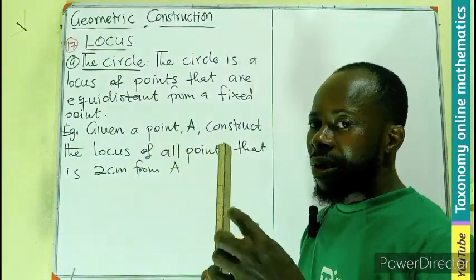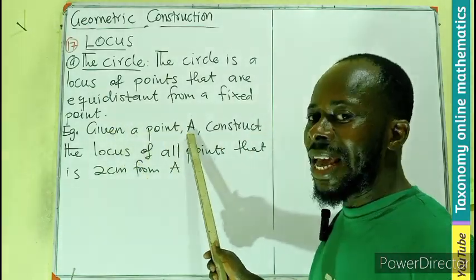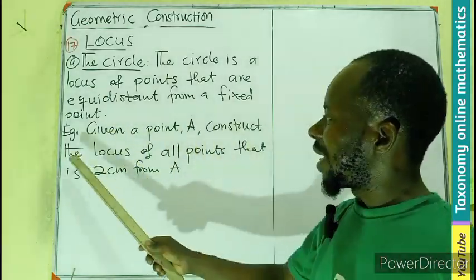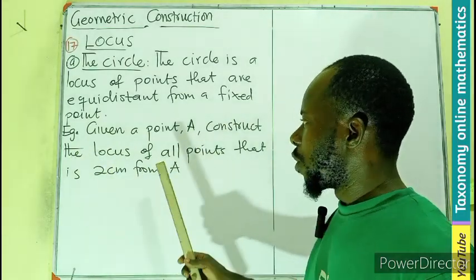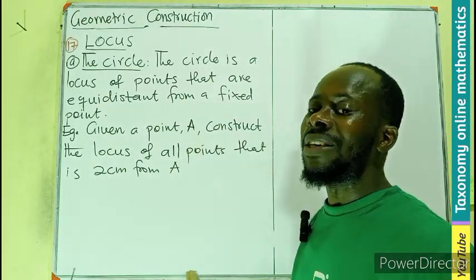So let's look at how some phrase will be given in the question. Given a point A, construct the locus of all points that are two centimeters away from the point A.